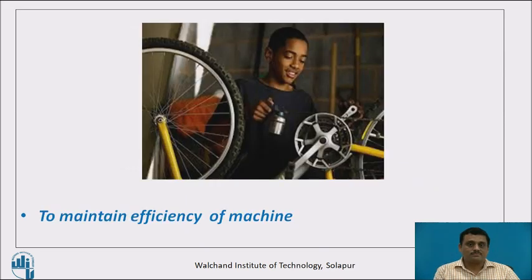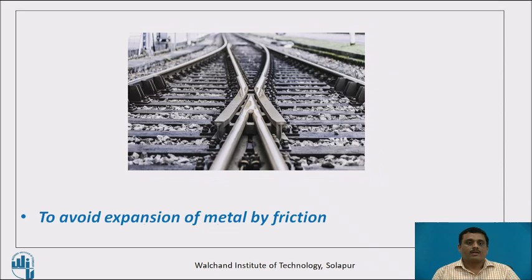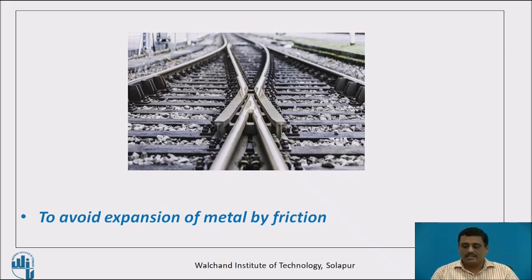The evolved frictional heat adversely affects the efficiency of the machine. Therefore, it is very important to absorb that heat, and thus lubricant is used as a coolant. Another important function is to maintain the efficiency of the machine — the machine should work efficiently for a longer period of time, and therefore the machine needs to be lubricated frequently. It is also observed that because of friction, metal undergoes expansion, and therefore lubricants are used to avoid the expansion of metal by friction.